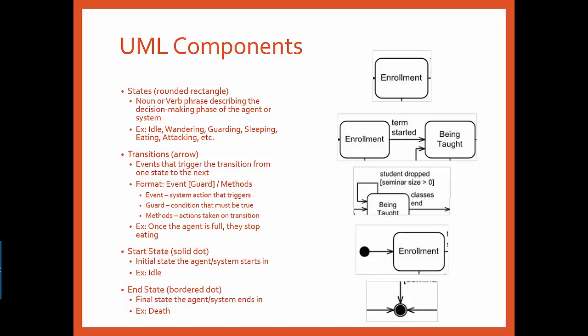State machines can optionally have an end state indicated by a dot with an extra border around it. While most agents or systems would have an end state, such as the agent dying or the system exiting, it is not always relevant or important to indicate this.